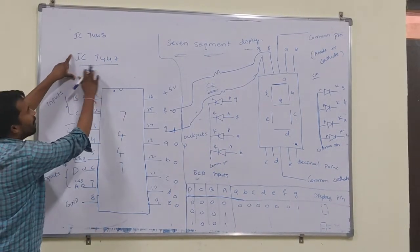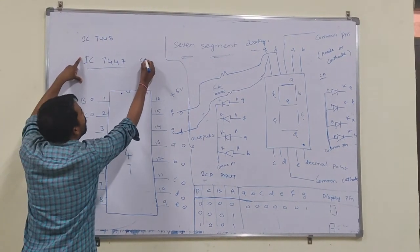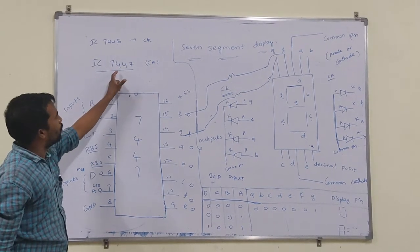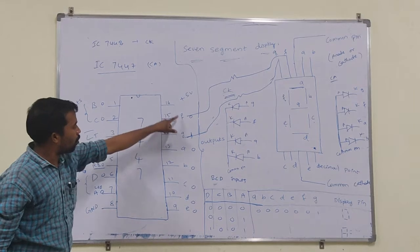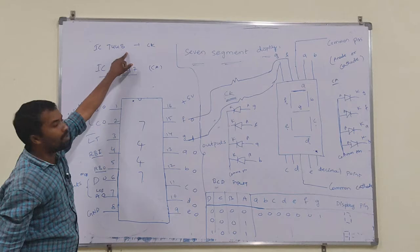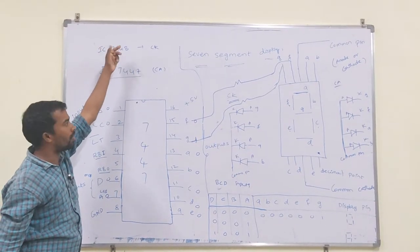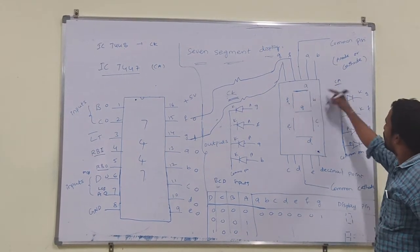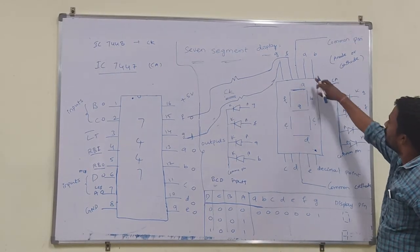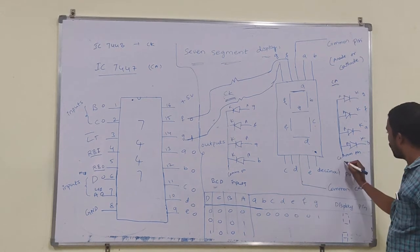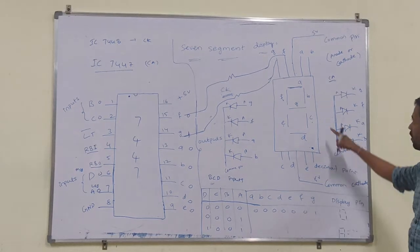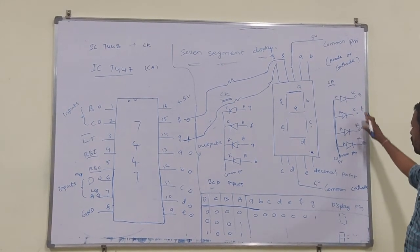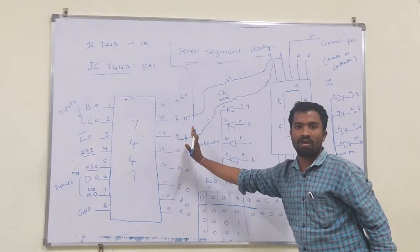This IC is used for driving the display. IC number 7447 is for common anode — it gives low outputs at its output pins. IC number 7448 is for common cathode — it gives high outputs. For the common anode seven segment display, the middle pin is short-circuited and you give five volts to it. The zero outputs come from IC 7447, which is why IC 7447 is used for common anode.